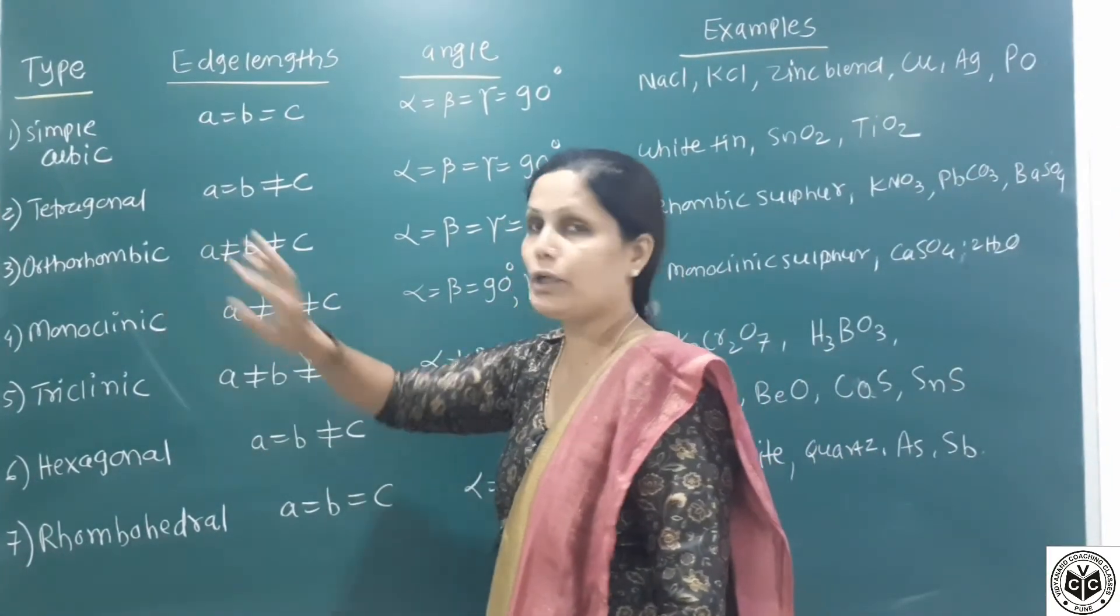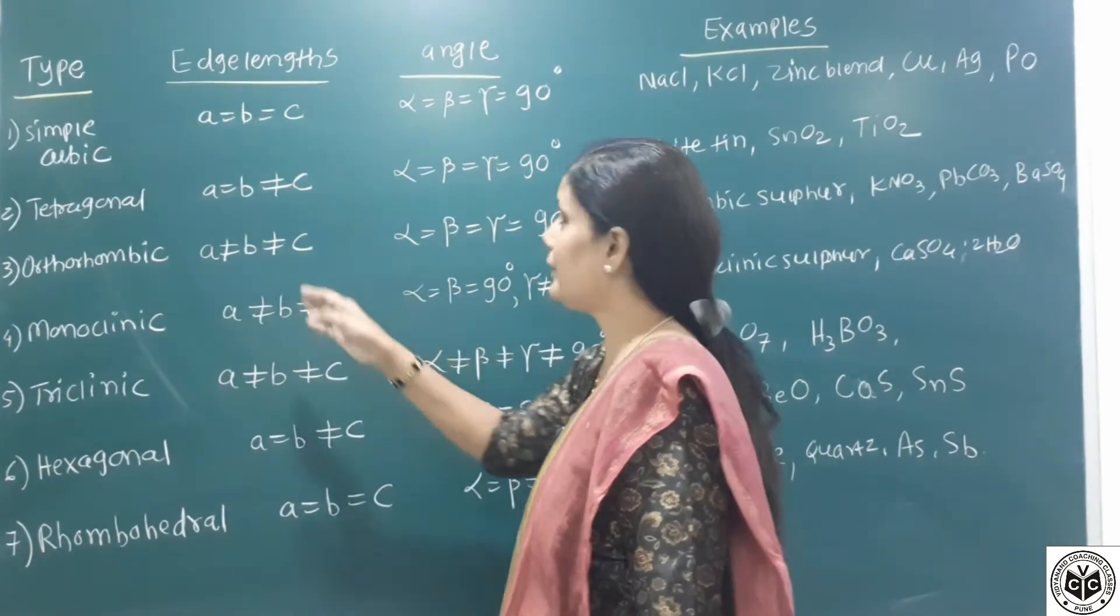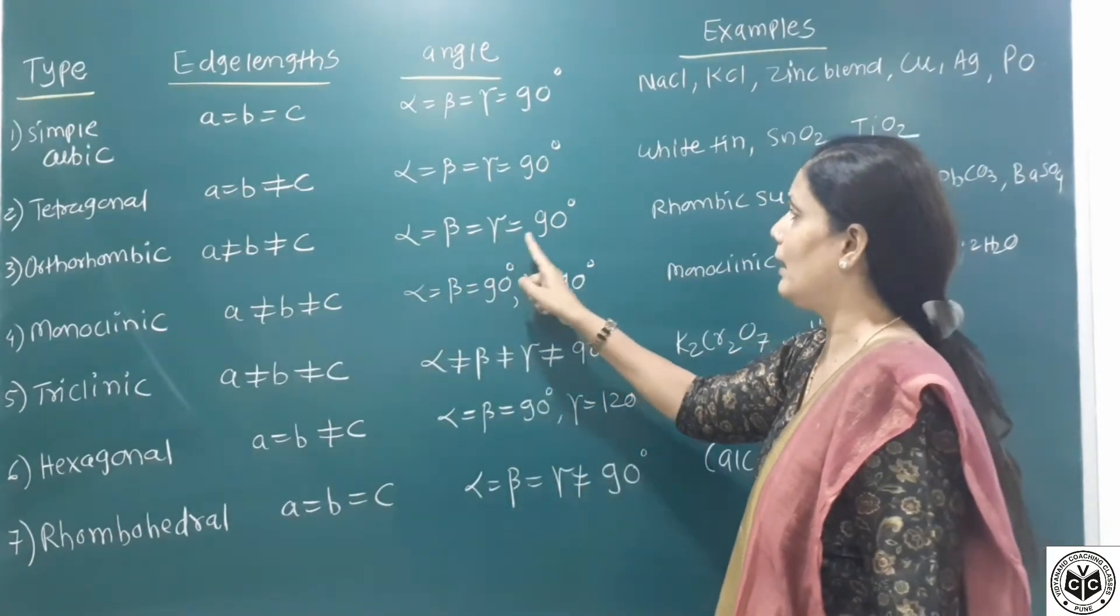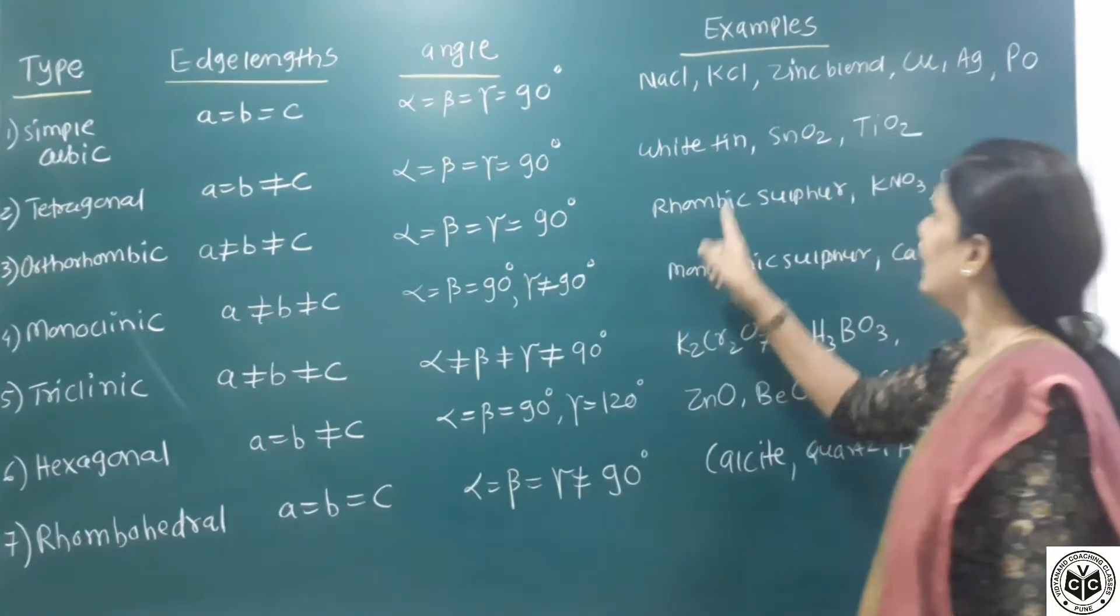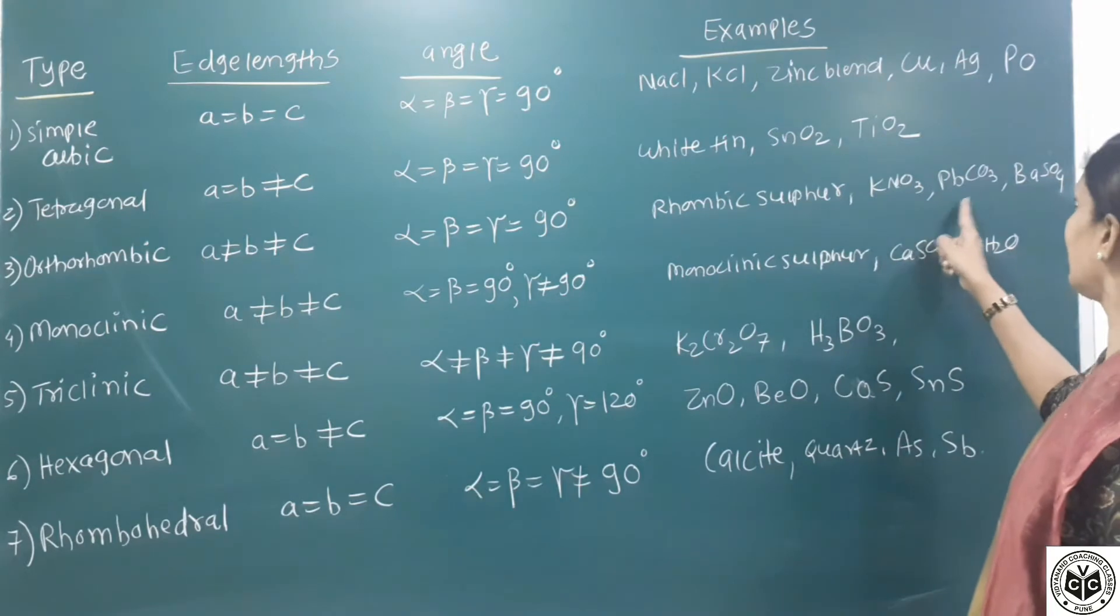Third Bravais lattice is orthorhombic. A is not equal to B which is not equal to C. Alpha equals beta equals gamma equals 90. Examples are rhombic sulfur, potassium nitrate, PbCO3 lead carbonate, and BaSO4.